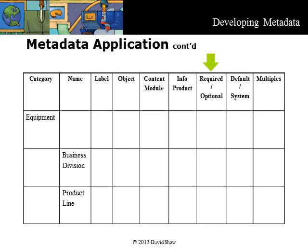Required or optional indicates if some metadata is required. The most common reason for making metadata required is when it is needed by an automated process, for example in assembling information for a publication. Default or system generated: wherever possible, the system will either generate a value for a specific metadata item or present a default value that the system user can change. Multiples allowed indicates if a metadata item can have multiple values for a single object. For example, a content module can have several contributors, and the contributor term should be used as many times as necessary.